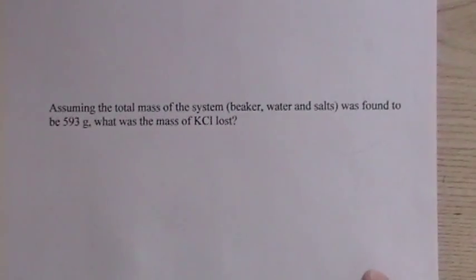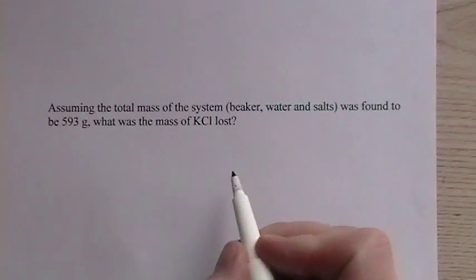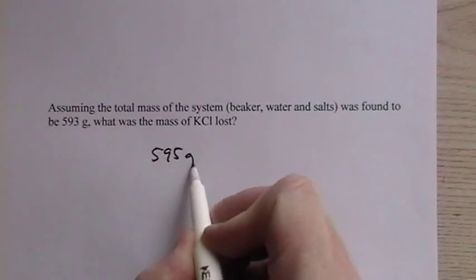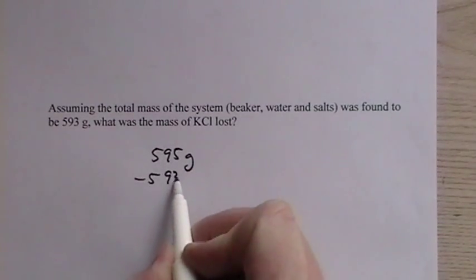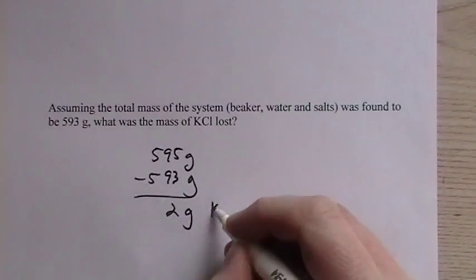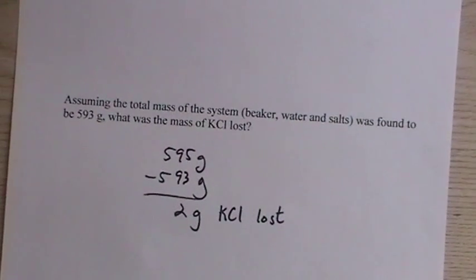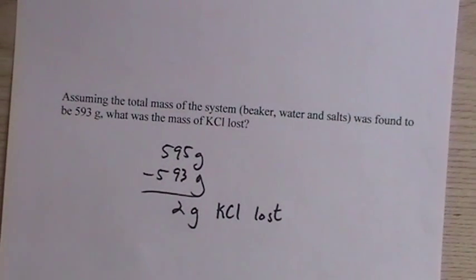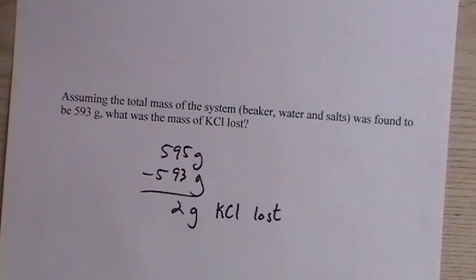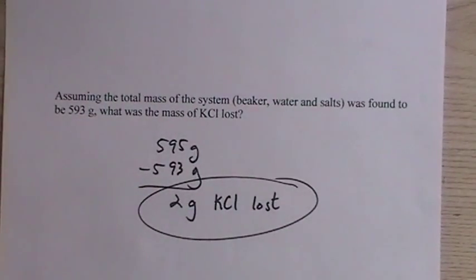So let's say that he, assuming the total mass of the system was found to be 593, what was the mass of the KCl lost? So 595 grams, minus 593, gives us 2 grams of KCl lost. And there's no question about that. As long as everything else was weighed out perfectly, and he knows that he started out with 5 grams of KCl that he was making his way towards the beaker with, before he lost it, then the amount that went on the floor must be 2 grams.